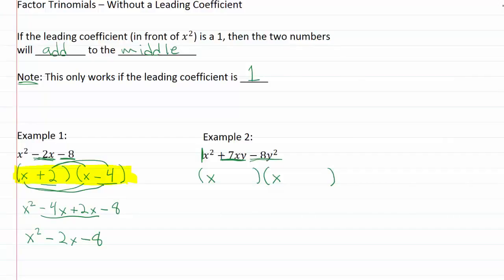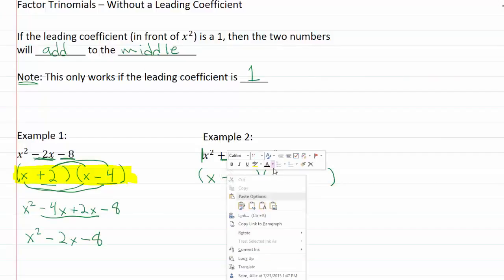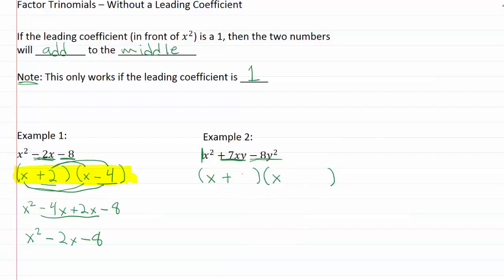So let's see, maybe we could try something like a positive one and a negative eight. But these should have a y extra so we can get our y squared. It looks like that's still not going to work because then I would have positive, negative and the bigger one is negative. So then we would get a negative seven.